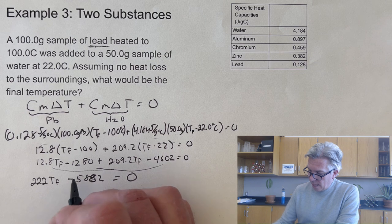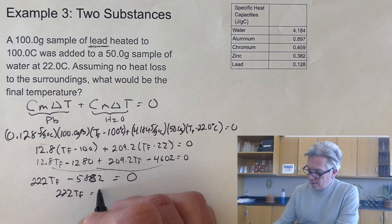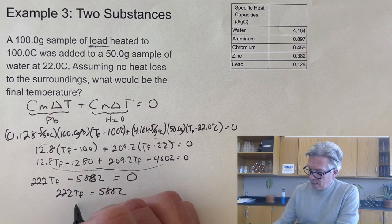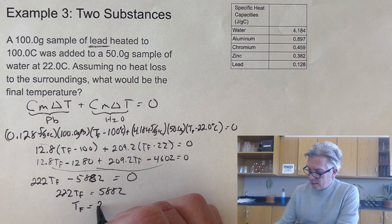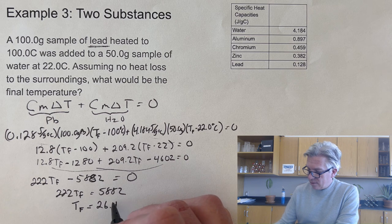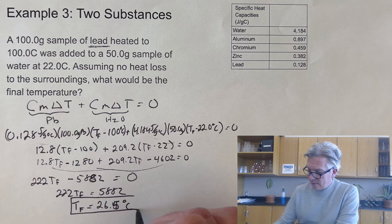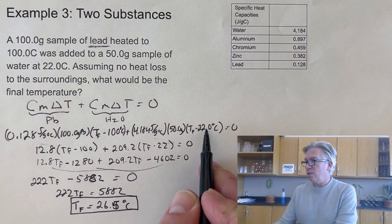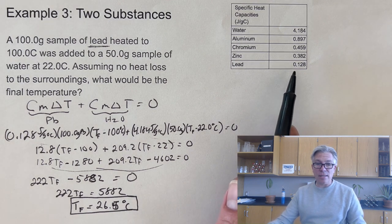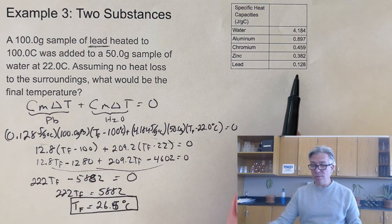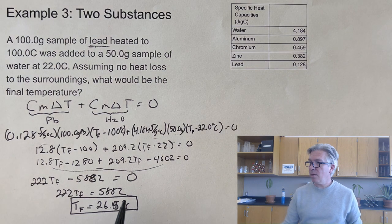So the water started at 22 and only went up to 26.5. But that's partly because lead has such a low heat capacity. It's not going to carry much heat with it, so it doesn't heat up the water very much at all. That was a tough one.